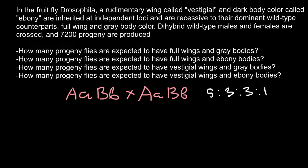We have two traits: one trait is the size of the wings and the second trait is the color of the body. Because these two genes lie on different chromosomes, we are going to get independent assortment. If we cross one parent that is heterozygous for gene A with another parent that is also heterozygous for gene A...